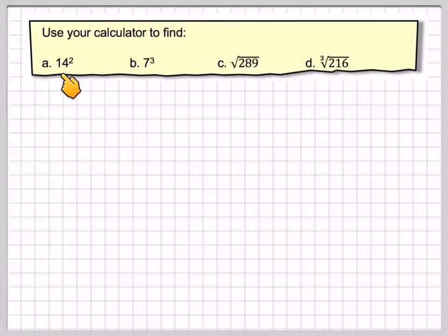Use your calculator to find 14 squared, 7 cubed, the square root of 289, and the cubed root of 216.